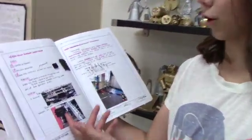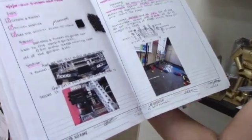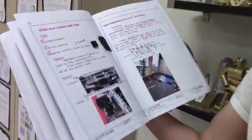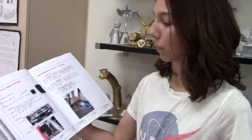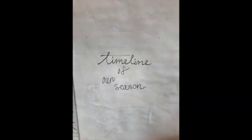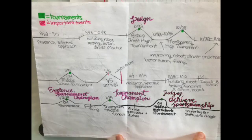For their problems and solutions, they added pictures to give judges a visualization when reading or skimming through the notebook during interviews. Another thing judges are looking for is a timeline or time management goals you have set for your season. Here's an example of a season timeline with tournaments marked in green, broken down into major events or things they're trying to accomplish throughout the season.